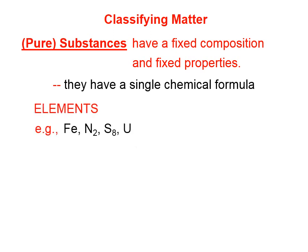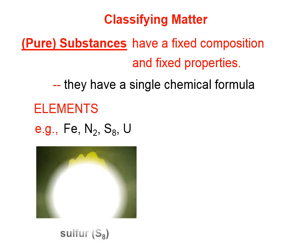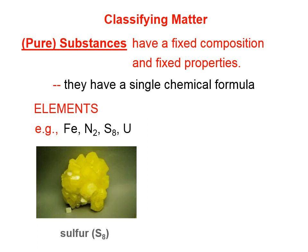Elements are examples of substances. Iron has a certain formula. Nitrogen has a certain formula. Sulfur. Uranium. They have formulas. They consist only of one type of atom. Their composition is fixed and their properties are unvarying.